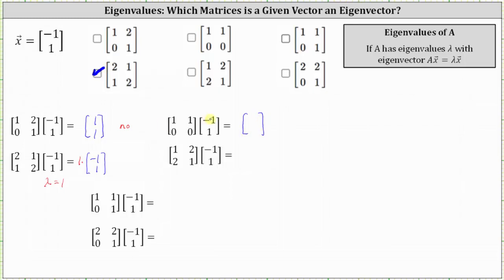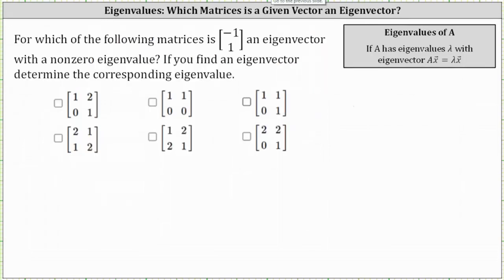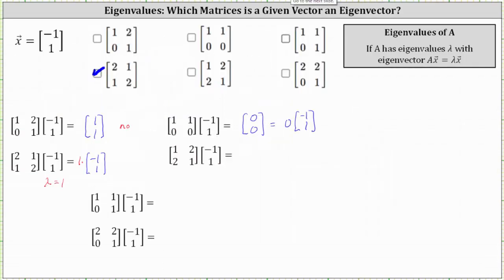Moving on to the next product, we have 1 times negative 1 plus 1 times 1, which is 0. And the second entry is 0 times negative 1 plus 0 times 1, which is 0. The product is equal to the zero vector, and the zero vector is a scalar multiple of (-1, 1) because we can write it as 0 times the vector (-1, 1). But our directions specify an eigenvector with a non-zero eigenvalue, so because here we have an eigenvalue of 0, we are not going to select the matrix [1, 1; 0, 0] from above.